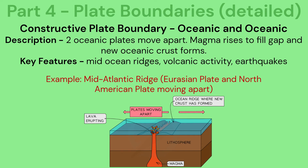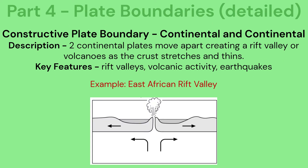Constructive plate boundary — oceanic and oceanic: two oceanic plates move apart; magma rises to fill the gap and new oceanic crust forms. Key features include mid-ocean ridges, volcanic activity and earthquakes. Constructive plate boundary — continental and continental: two continental plates move apart creating a rift valley or volcano as the crust stretches and thins. Key features include rift valleys, volcanic activity and earthquakes.